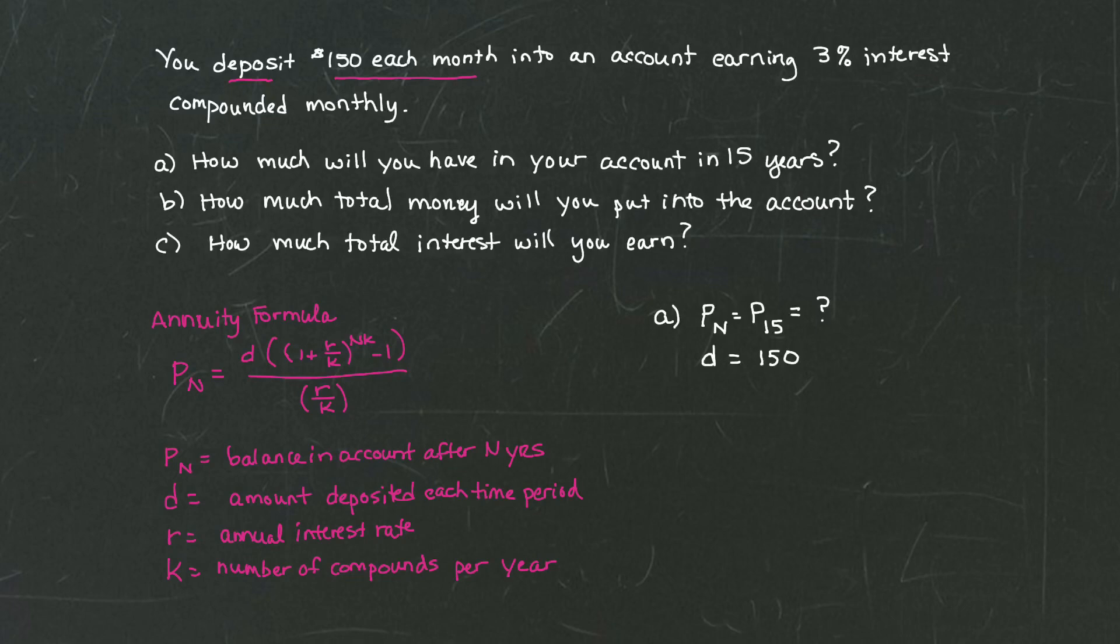We also know what R is. R is our interest rate, which is 3%, and we want to convert that into a decimal. That's equal to 0.03. And finally, K, which is the number of compounds per year. Since we're compounding monthly, that means that the number of compounds are going to be 12, corresponding to 12 months in the year.